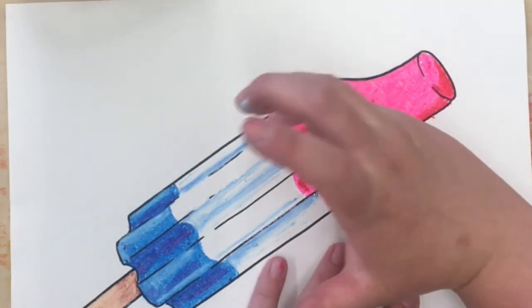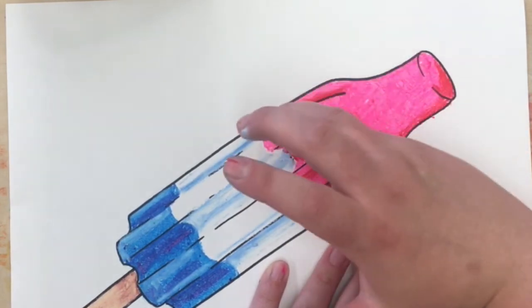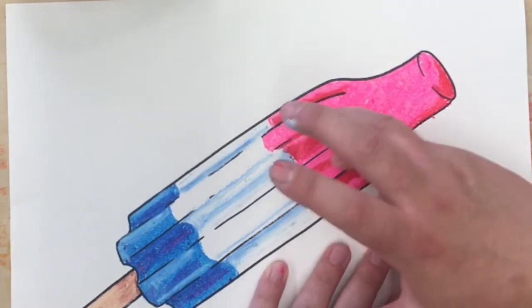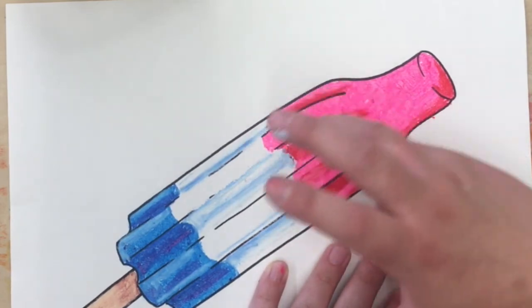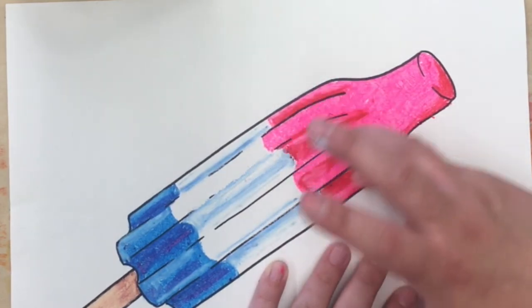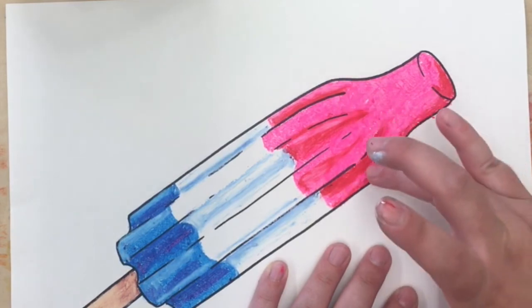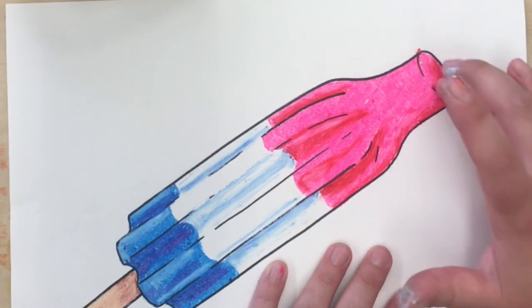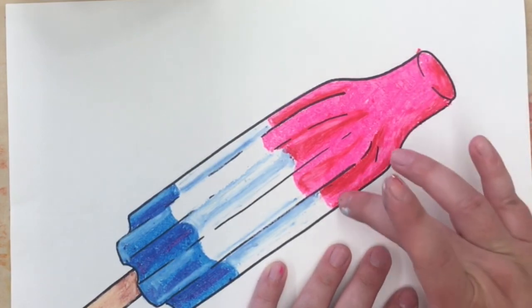Another nice thing about oil pastels is you can use your fingers to smudge and blend the colors and make the transitions more gradual. As you can see, I have all kinds of oil pastel colors on my fingers while I'm doing this, so it's important to be careful that you don't accidentally cross-contaminate your colors when and if you're choosing to blend with your fingertips.